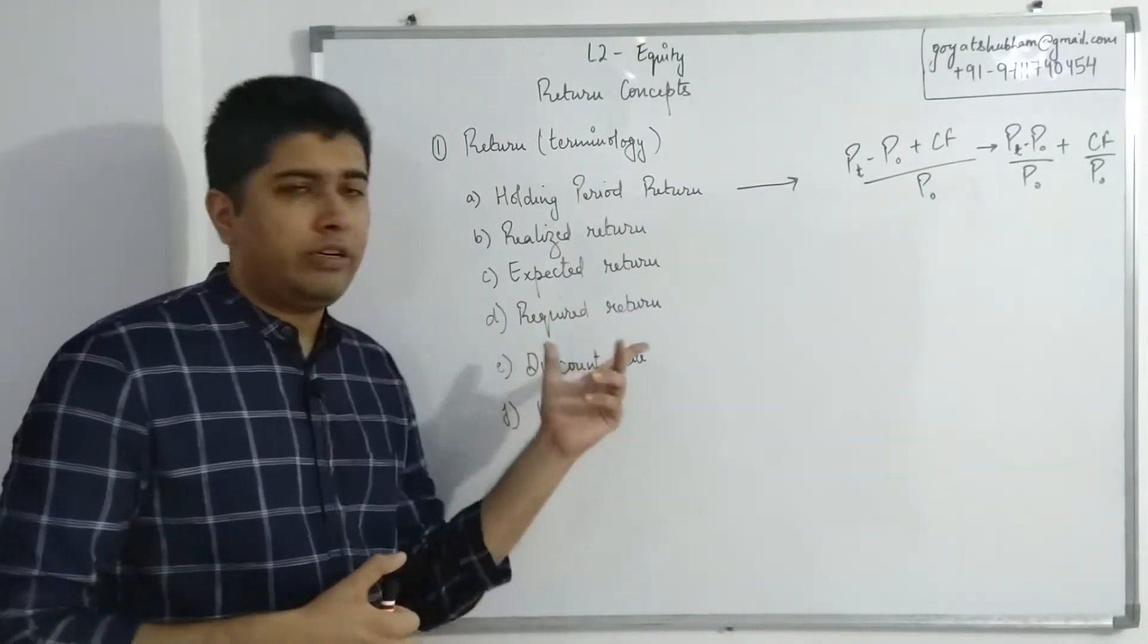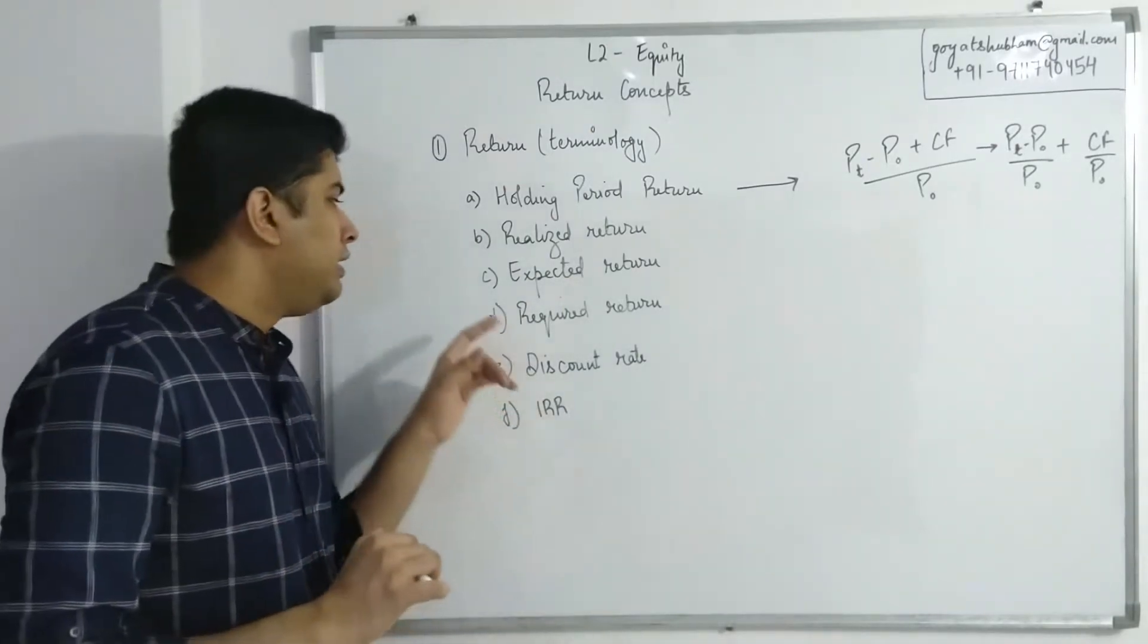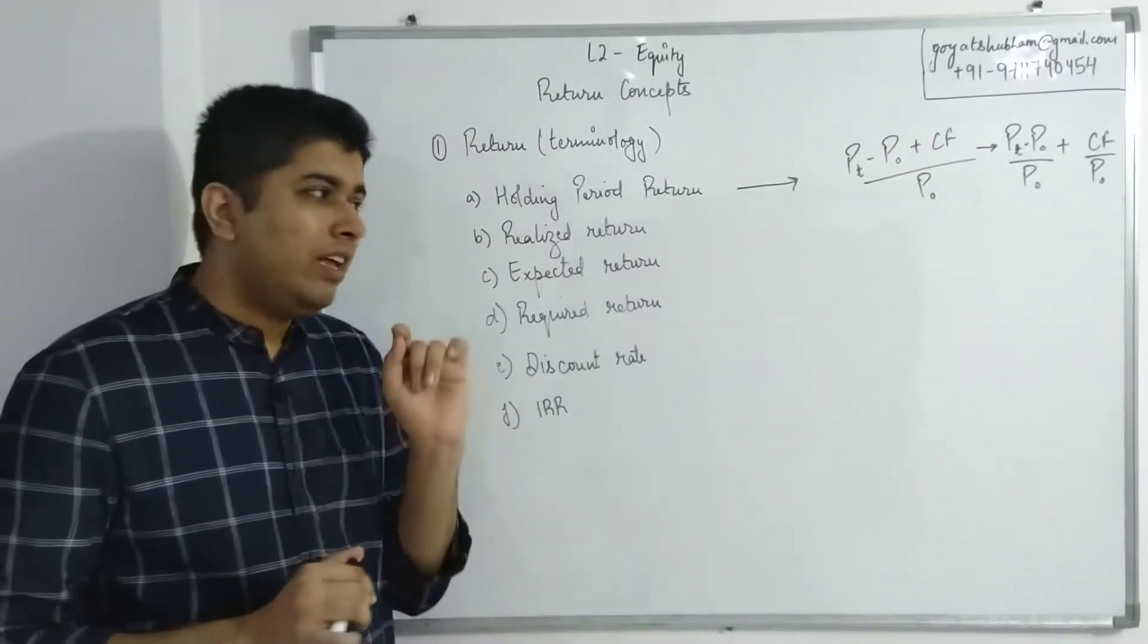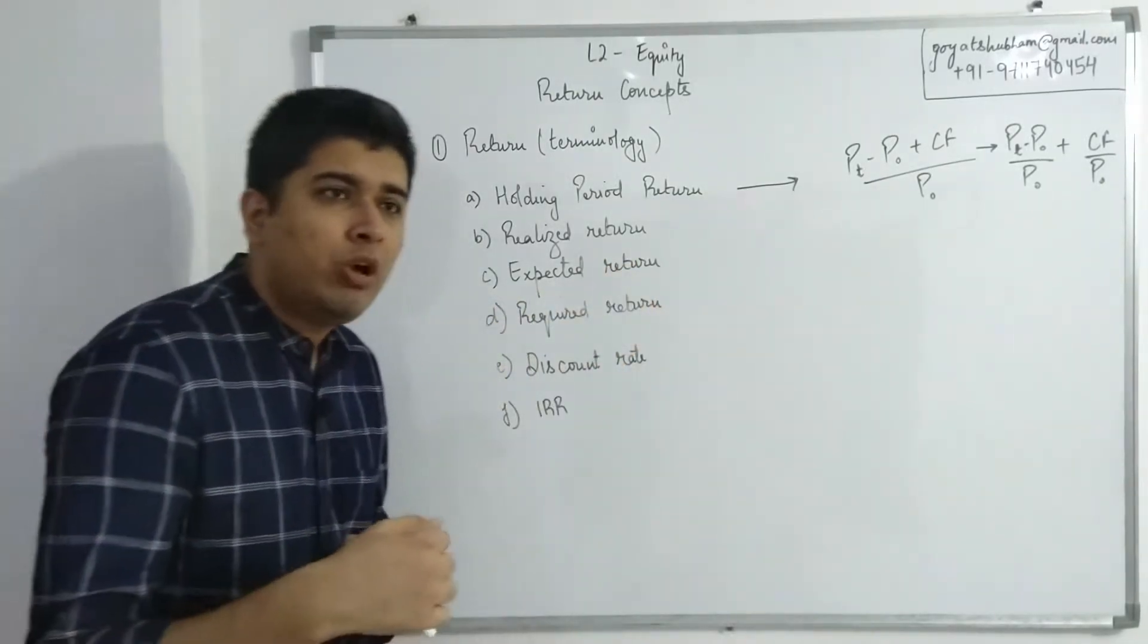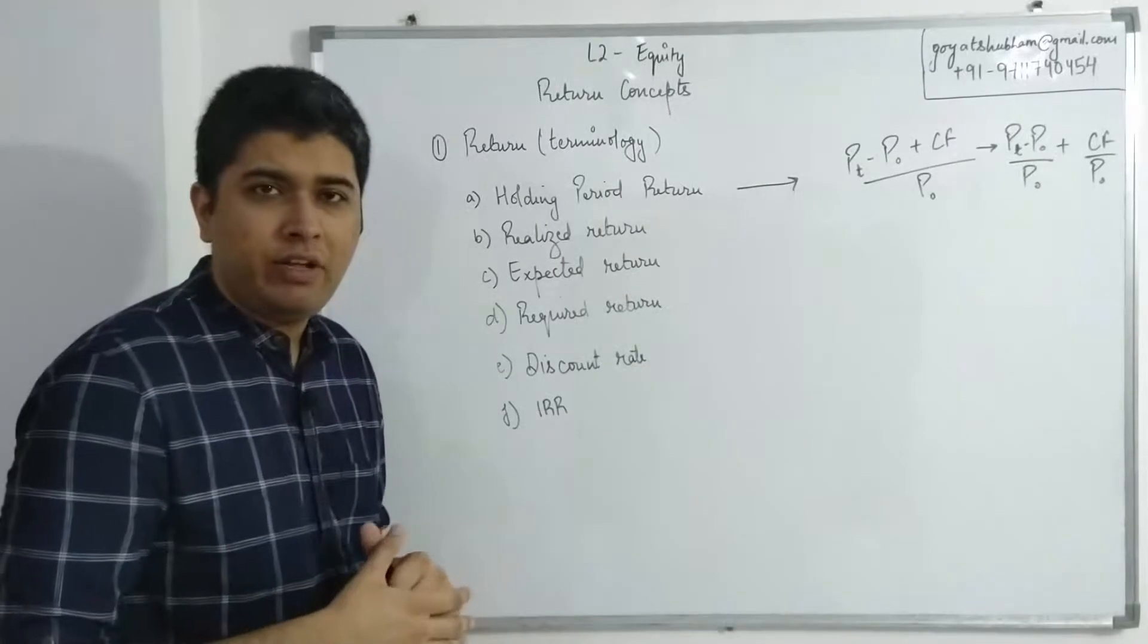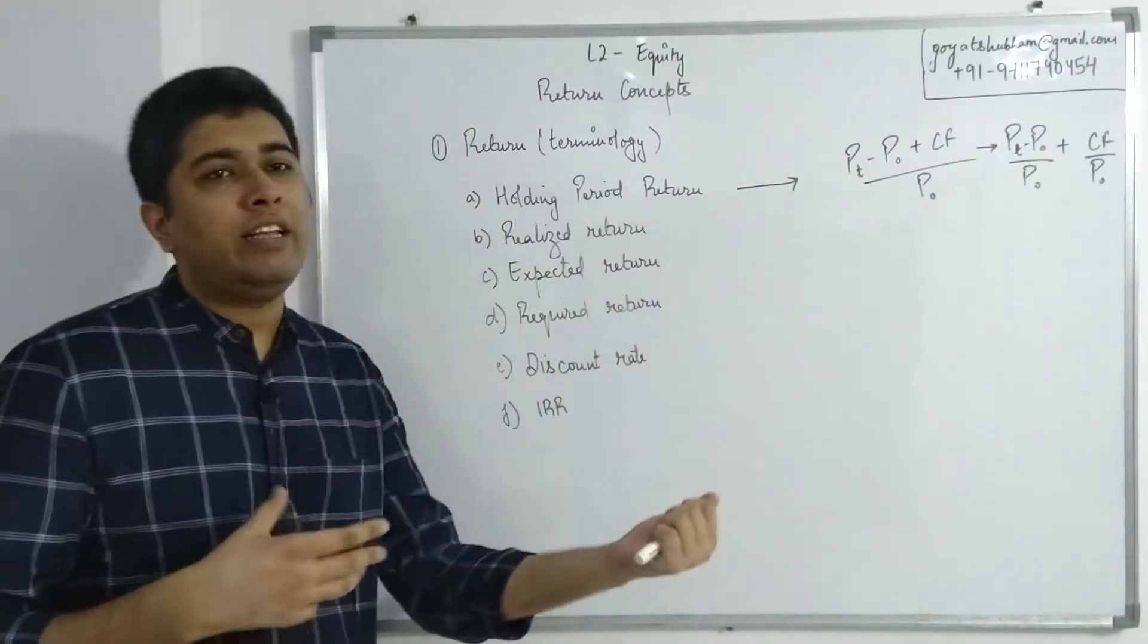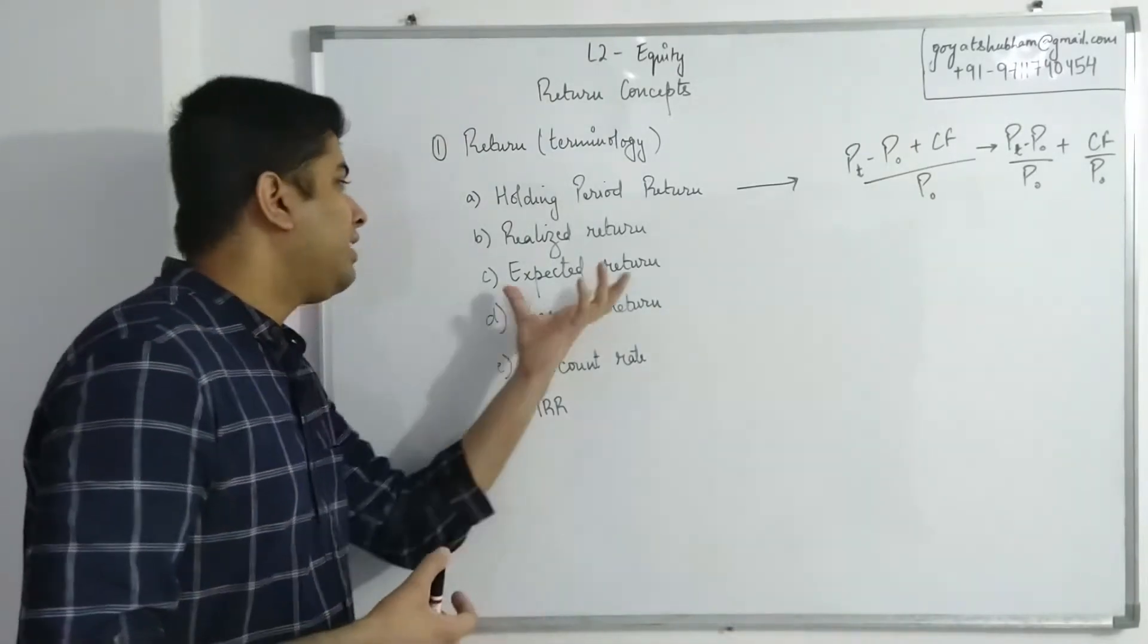Next up we have required return. Just like we had first and second being similar in certain situations, third and fourth - expected and required - these would also be similar in certain situations. But before we cover those situations, let's first discuss what exactly is the difference. Expected is what I expect from a particular security, what I think it might have. Required is what I want from the securities in which I am investing. One is expecting, the other is wanting. That is the major difference between expected return and required return.